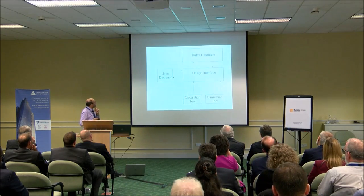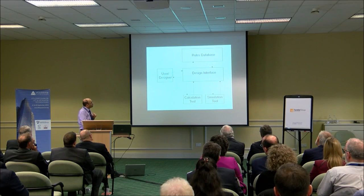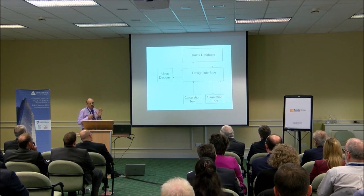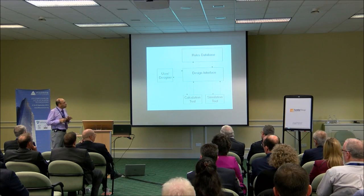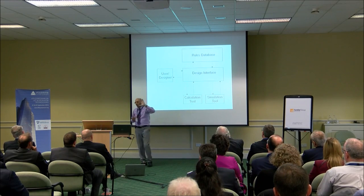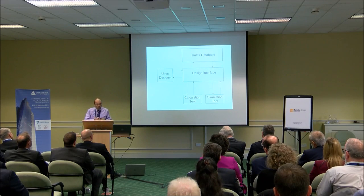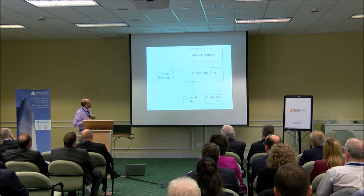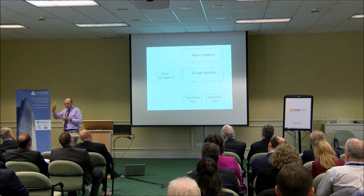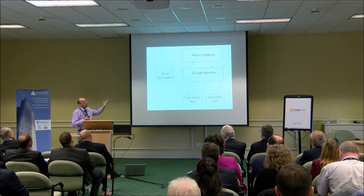Looking at the structure of the system: we have the user/designer working with an interface. The two tools we have are calculation and simulation. Most people will start with a quick calculation to get a ballpark, then move on to simulation to look at other parameters. We assume these two pieces exist for a basic building block. The rules will sit on top of that design interface — the interface will query the rules, come back to the user, suggest something, prompt something, and keep applying the rules until we reach a design.